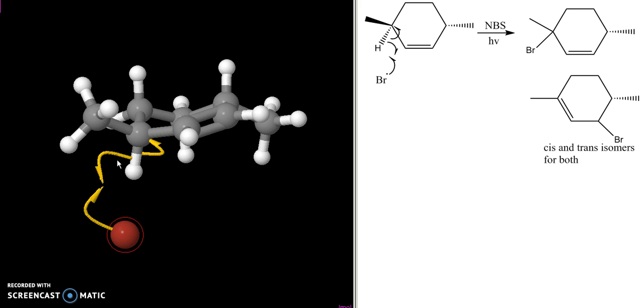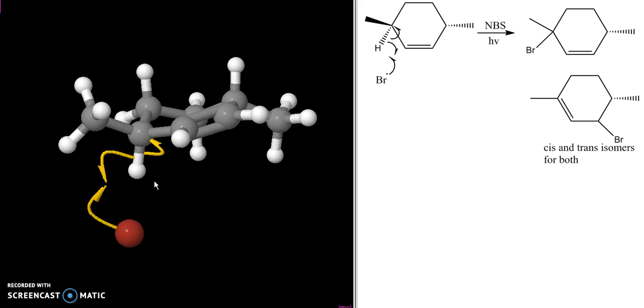And here are my arrows. The bromine and one of the two electrons from this bond come together. The other electron goes on to this carbon, and we end up getting the radical.